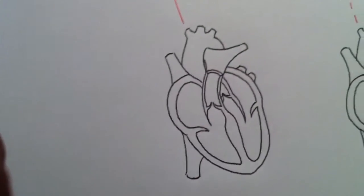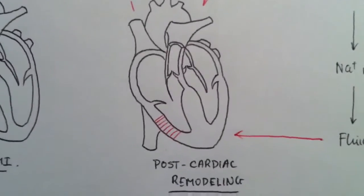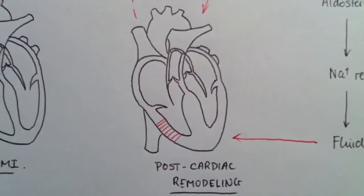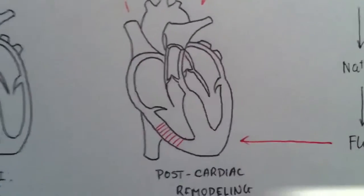So here you have a normal heart, and over here you have a heart that is after cardiac remodeling. So how does this all start?